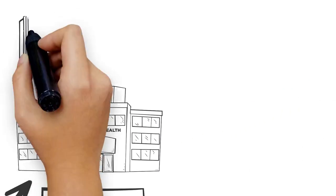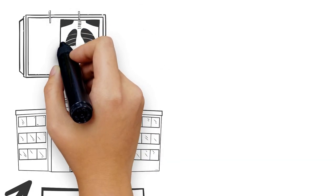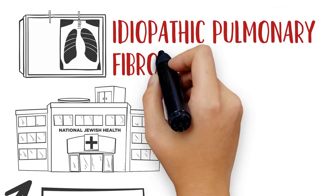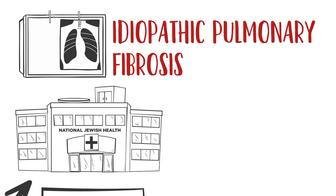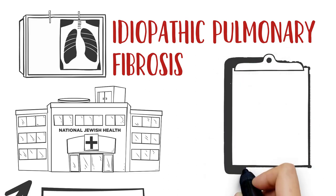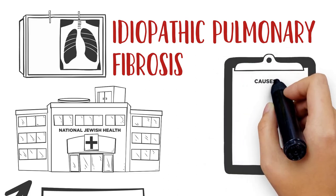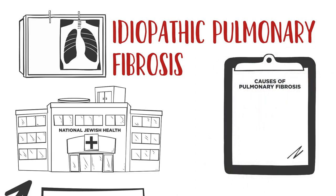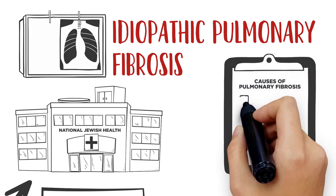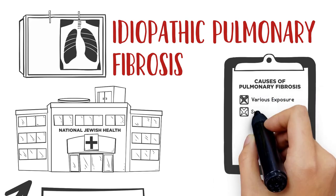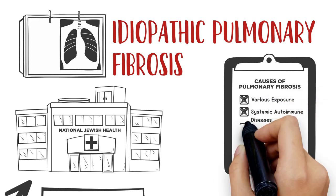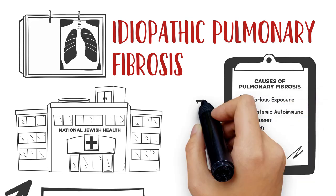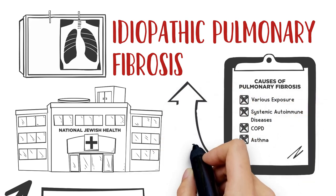When idiopathic pulmonary fibrosis is considered a potential diagnosis, it is important to first rule out known causes of pulmonary fibrosis. These include various exposures and systemic autoimmune diseases that may lead to pulmonary fibrosis.